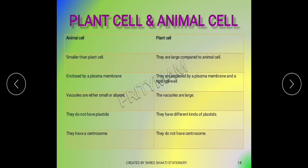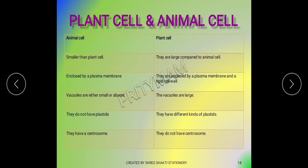Plant cells are enclosed by both a plasma membrane and a cell wall. Vacuoles are large in plant cells. Animal cells do not have plastids. The three types of plastids are found in plant cells. Animal cells also do not have centrosomes.